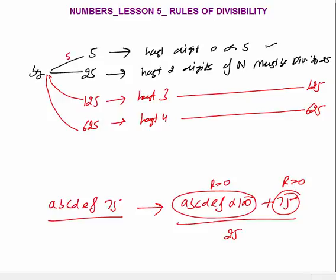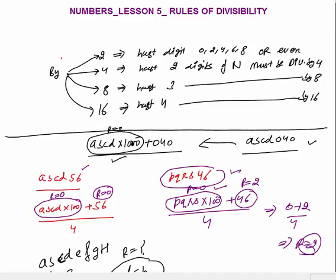You can see the pattern: 5¹ — check last digit; 5² — last two digits; 5³ — last three digits; 5⁴ — last four digits. The same was true for powers of 2: 2¹ — last digit; 2² — last two digits; 2³ — last three digits; 2⁴ — last four digits.